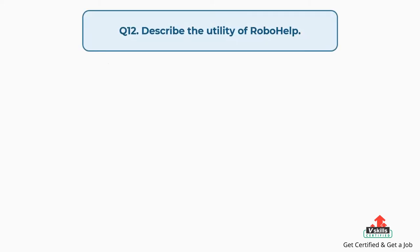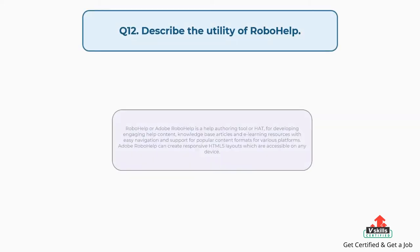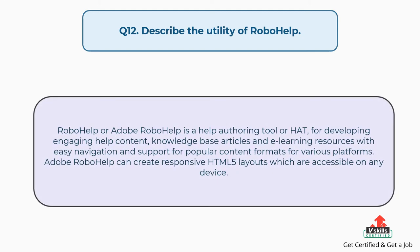Question number twelve: describe the utility of RoboHelp. RoboHelp or Adobe RoboHelp is a help authoring tool for developing engaging help content, knowledge base articles, and e-learning resources with easy navigation and support for popular content formats for various platforms. Adobe RoboHelp can create responsive HTML5 layouts accessible on any device.